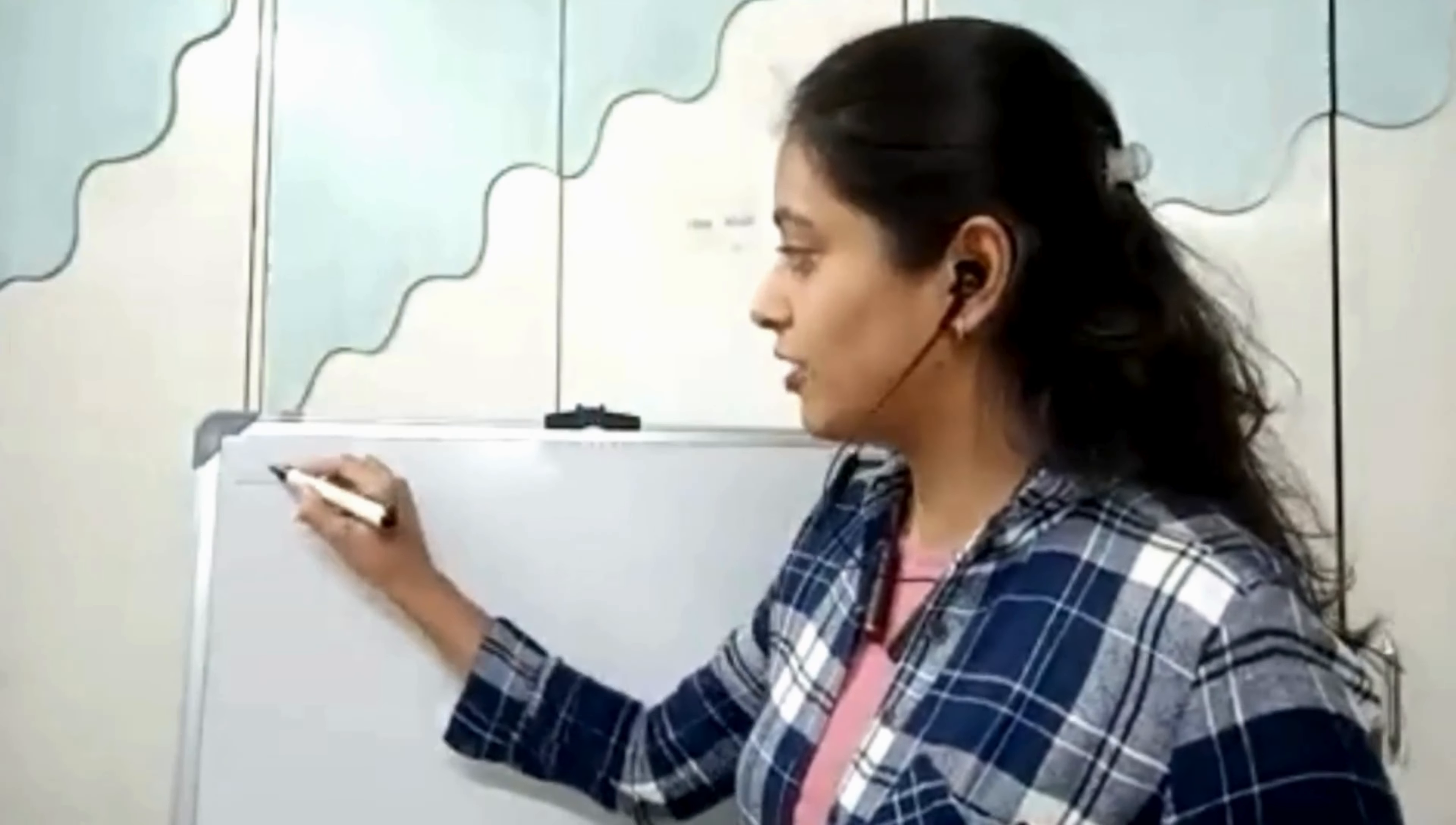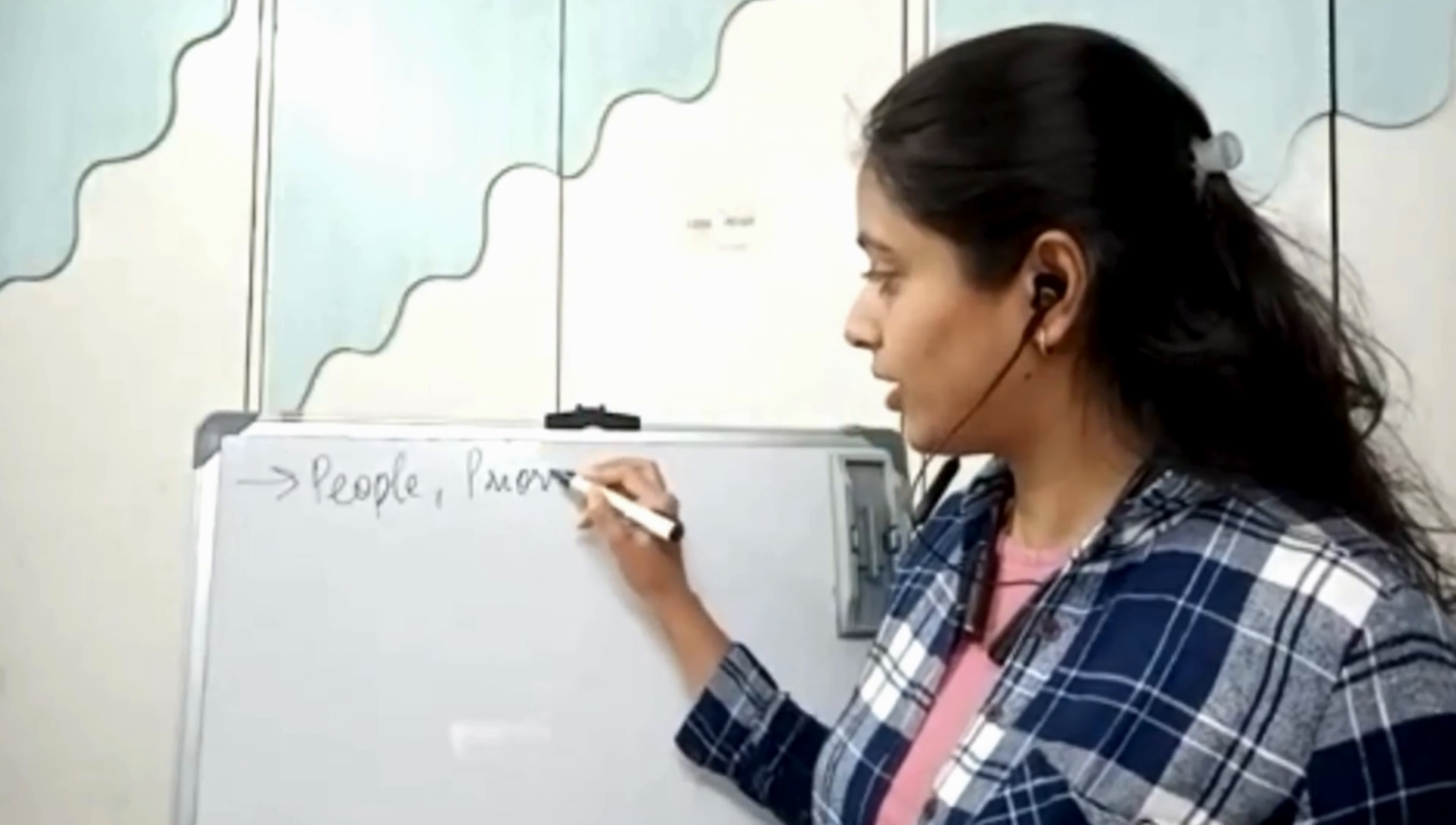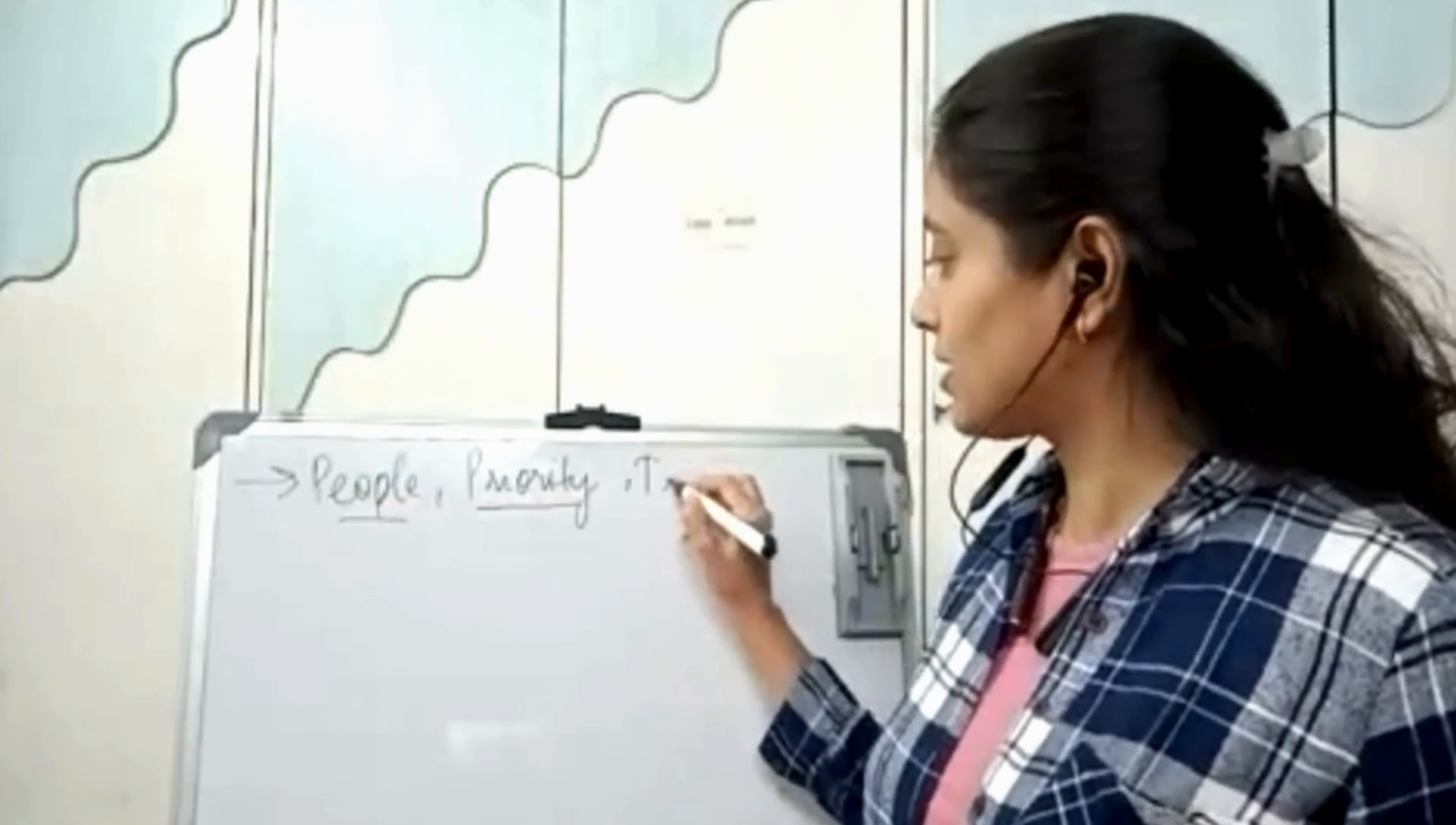First of all, the first method is a lot of people use it. People, priority. People and priority. People, priority and task.